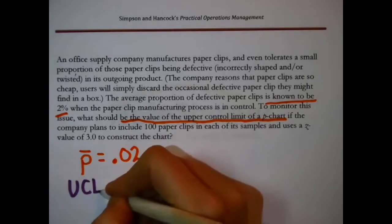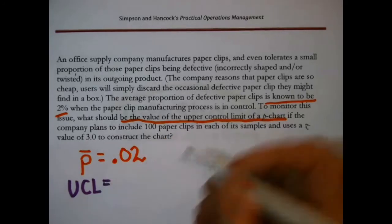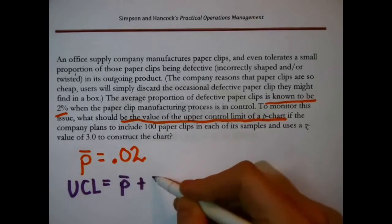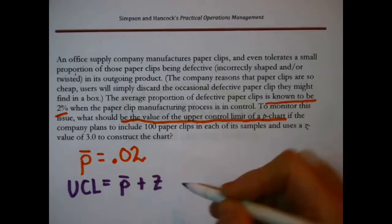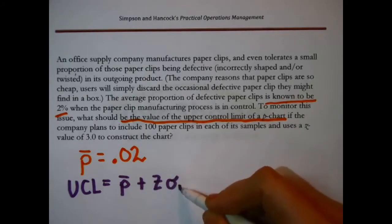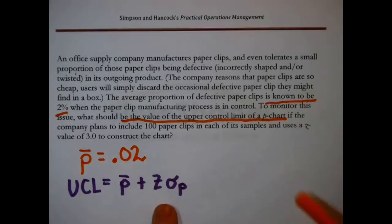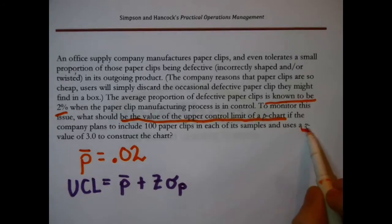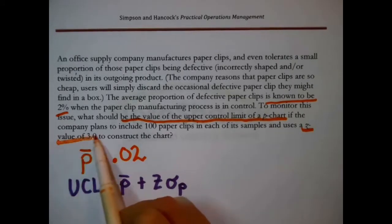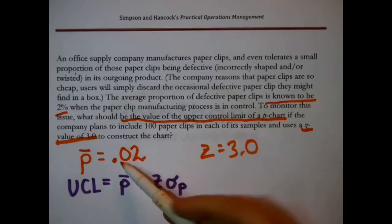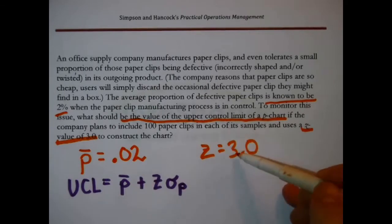The upper control limit of a so-called P-chart is that P-bar, right there, plus the appointed Z-value times the standard deviation in the sample proportions. We're given that, Z equals 3.0. So the 0.02 goes here, the 3.0 goes here, we just need this.